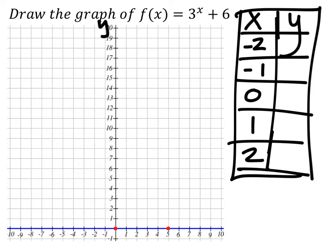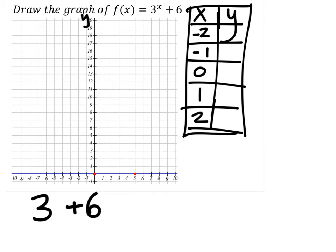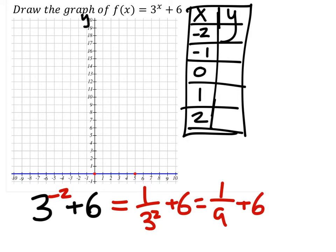So let's go ahead and start with x being negative 2, and then we're just going to solve this. So that would give us 1 over 3 squared plus 6, which is really 1 ninth plus 6. And once we get common denominators right there, that would give us 55 ninths.